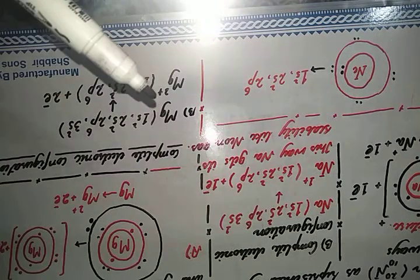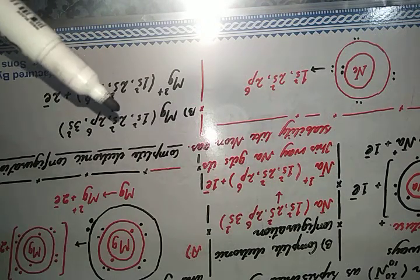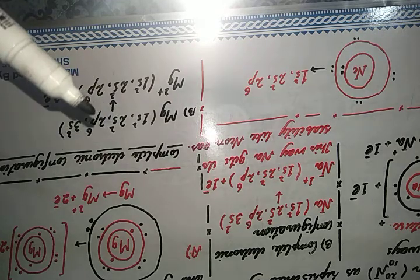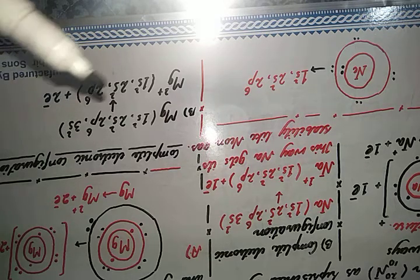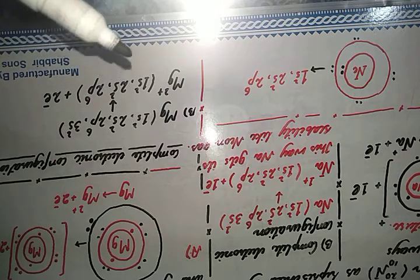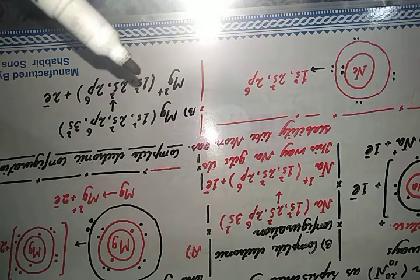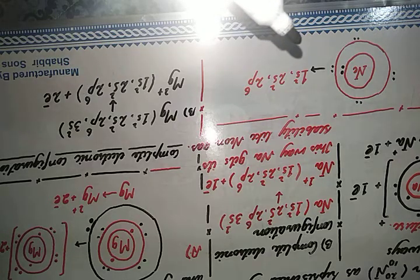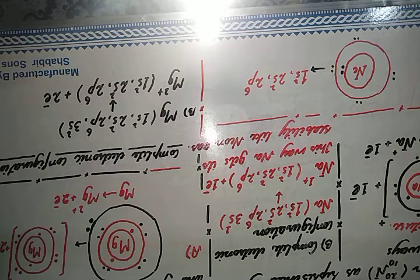In the electronic configuration method, magnesium's configuration is 1s² 2s² 2p⁶ 3s². The 3s² electrons are the two that magnesium must lose. The magnesium cation Mg²⁺ therefore has the configuration 1s² 2s² 2p⁶, which is the same as neon gas — confirming it has gained the noble gas stability.